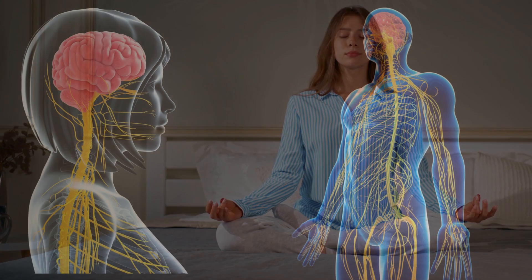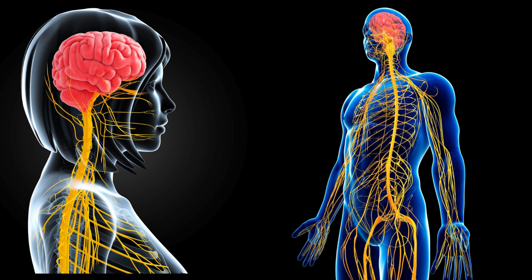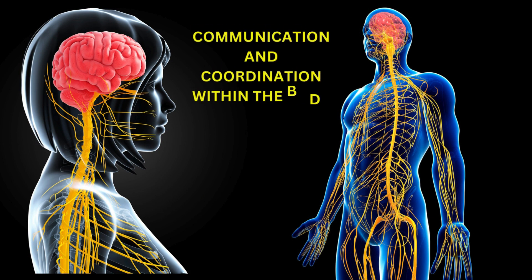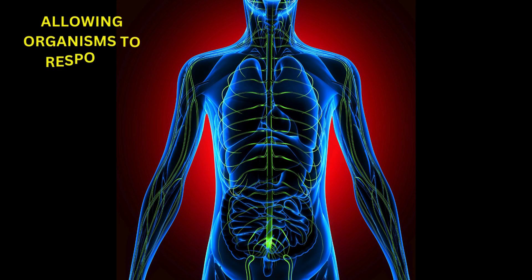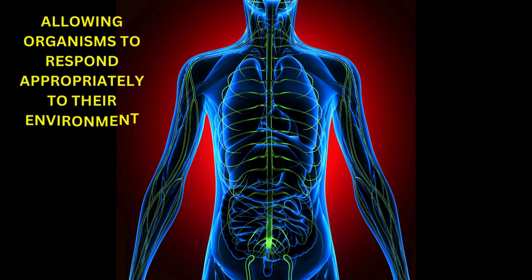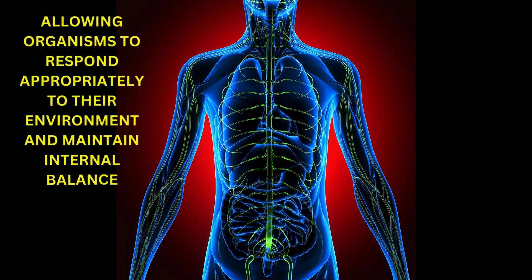Overall, the nervous system is essential for communication and coordination within the body, allowing organisms to respond appropriately to their environment and maintain internal balance.